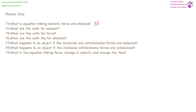Moment is equal to force times distance. The units for moment are newton metres, force is newtons, and distance is metres. If an object has balanced clockwise and anticlockwise forces, it is going to remain balanced — nothing is going to happen. If the clockwise and anticlockwise forces are unbalanced, you're going to have a turning effect.